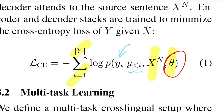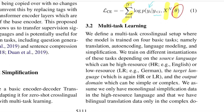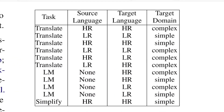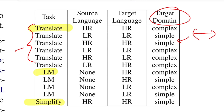The authors train this encoder-decoder in a multitask setting with four tasks: translation, auto-encoding, language modeling, and text simplification. Depending on the source/target language (high or low resource) and the output domain (simple or complex), every training instance is formatted and passed through the model. There are three major task groups: translate, language model, and simplification, with auto-encoding folded under translate.